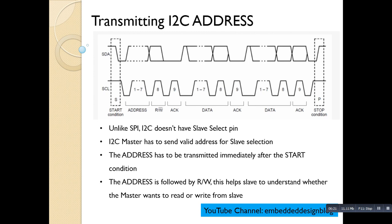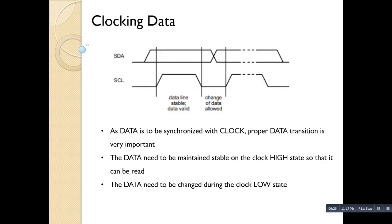Now let's look at how the slave knows when valid data is present on the line. During the clock low condition, the data is changed, and during the clock high condition the data is stable. This is the valid data condition in I2C communication — it indicates that valid data is present on the SDA line. It is important that embedded engineers follow this timing when writing I2C code so that proper data is fed to the I2C slave.